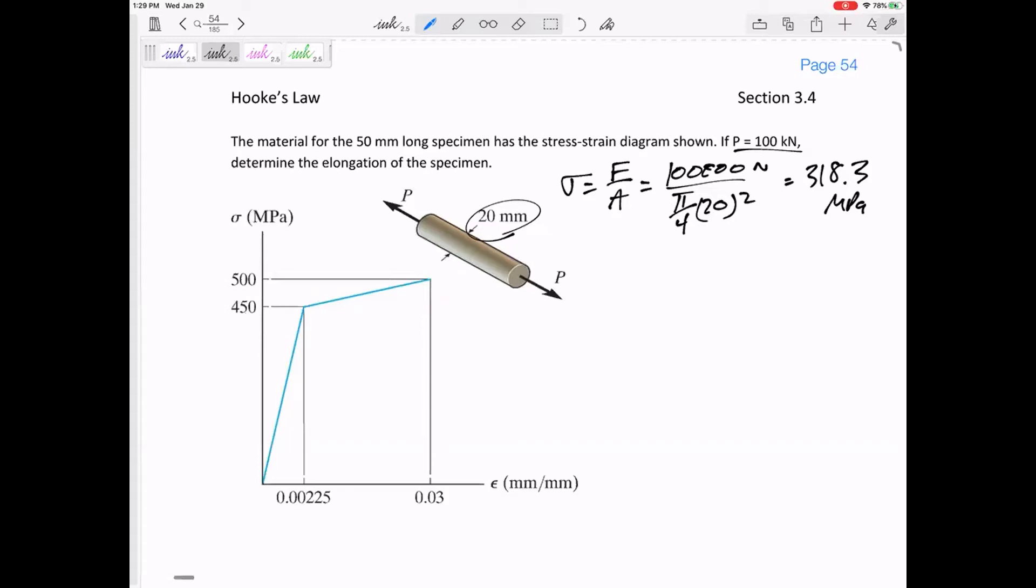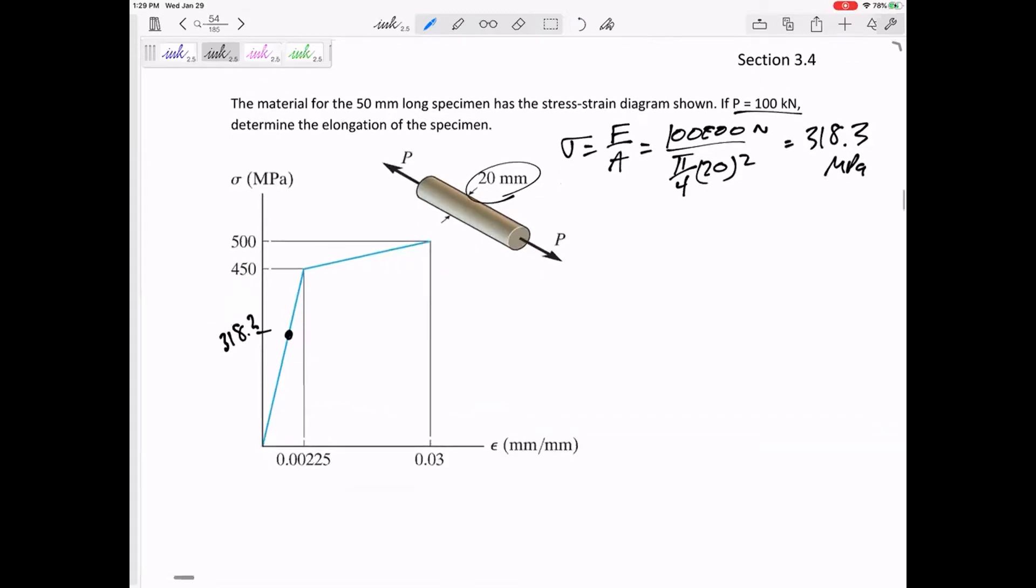Determine the elongation of the specimen. So let's look here. I am just in the elastic region, right? I'm just in the elastic region. And so you need to be able to, given the Y value of stress, can you find the strain? There's two ways. Calculate the E and then find it. I like to do similar triangles.